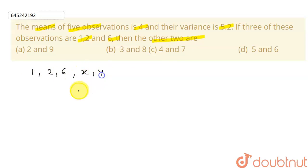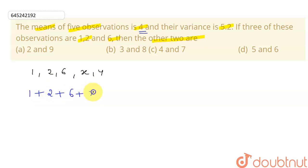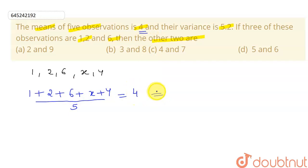Let me take the other two observations as x and y. We are given the mean, which is four. So the mean of the observations is: one plus two plus six plus x plus y, divided by five, equals four. One plus two is three, and three plus six gives us nine.